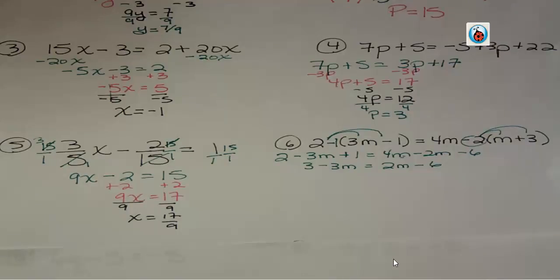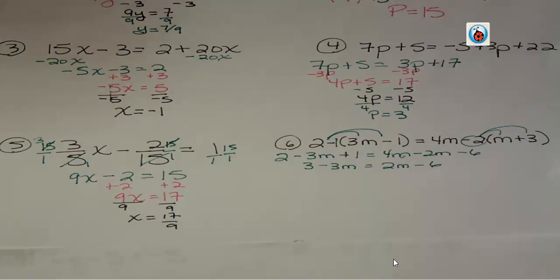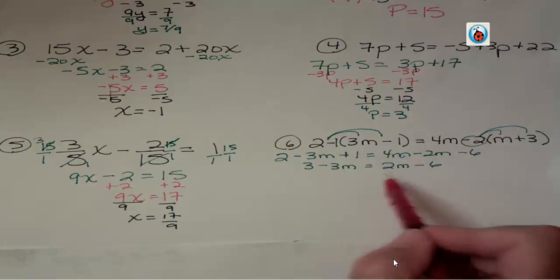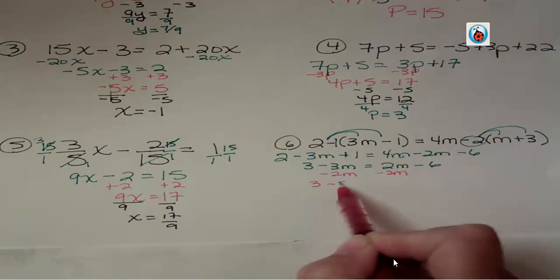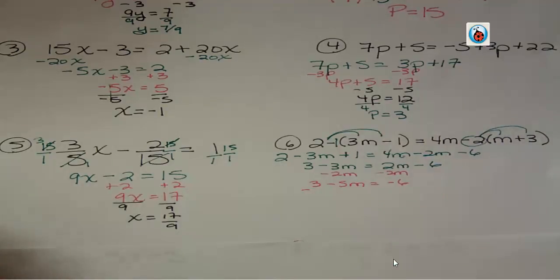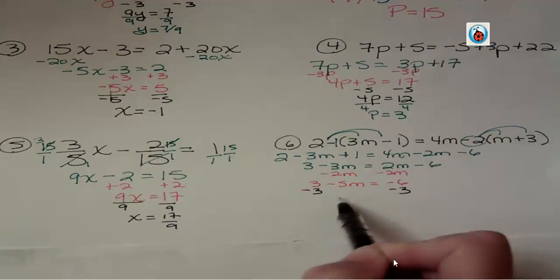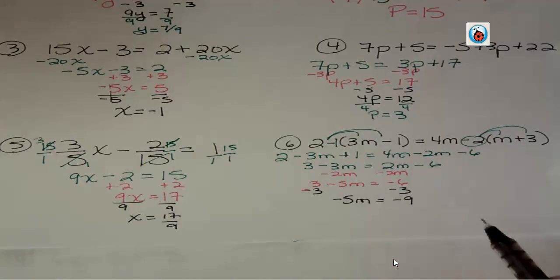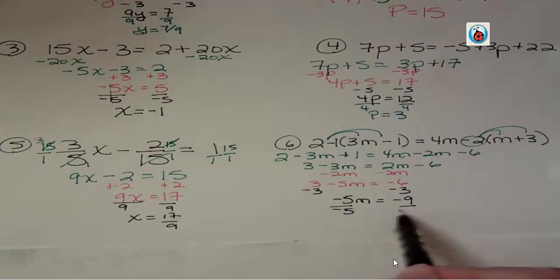4m minus 2m is 2m. I had to distribute to get rid of parentheses, then I had to simplify both sides. Notice when I'm working on one side, I don't do the opposite because they're on the same side. The only time you do the opposite is if you're going to cross the equal sign. Now I'm going to subtract 2m from both sides. And then I'm going to subtract 3 from both sides. I still have a minus. So that's minus 5m.